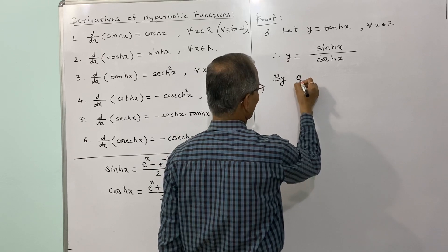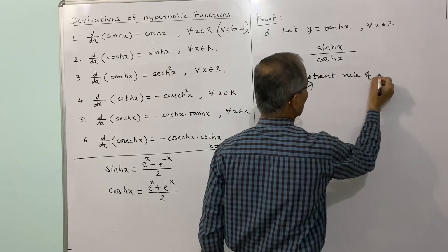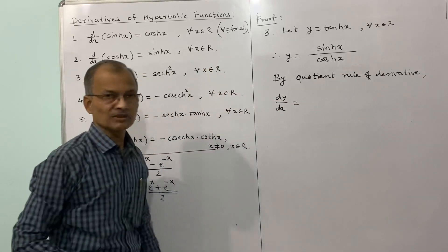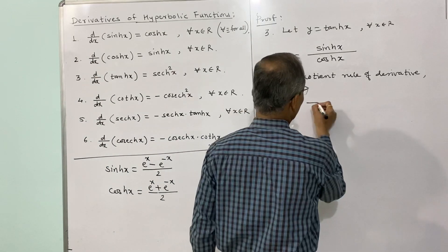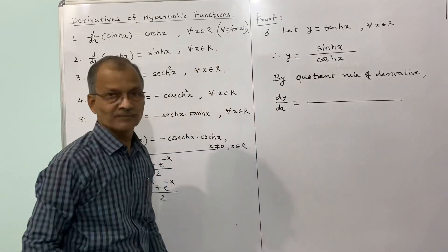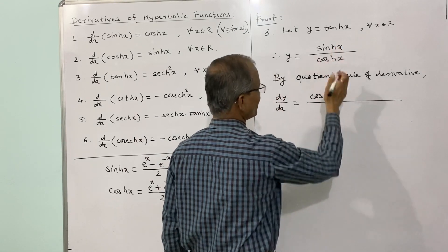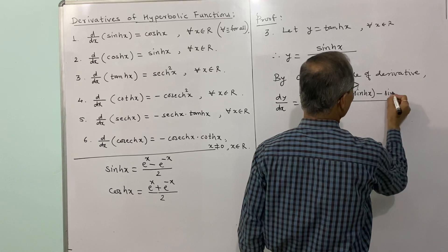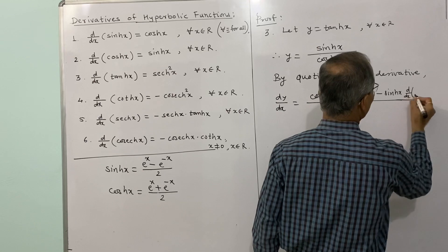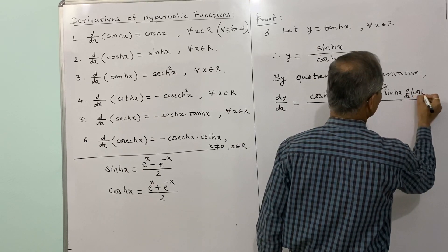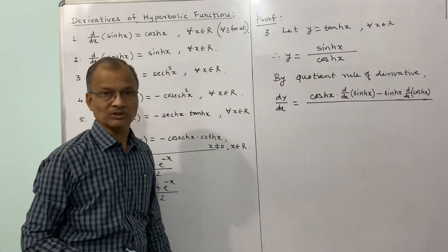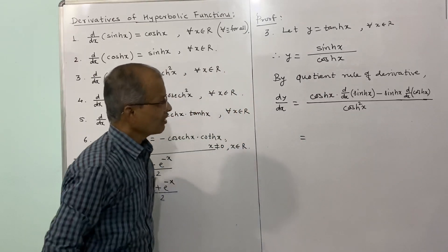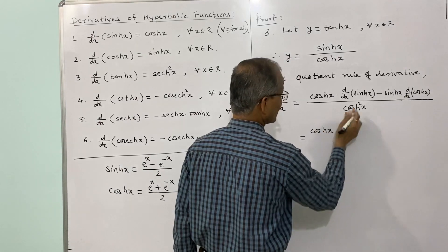Therefore dy/dx by the quotient rule is: denominator, which is hyperbolic cos x, times the derivative of the numerator, which is d/dx of hyperbolic sin x, minus the numerator, hyperbolic sin x, times the derivative of the denominator, d/dx of hyperbolic cos x, all divided by the square of the denominator, hyperbolic cos squared x.